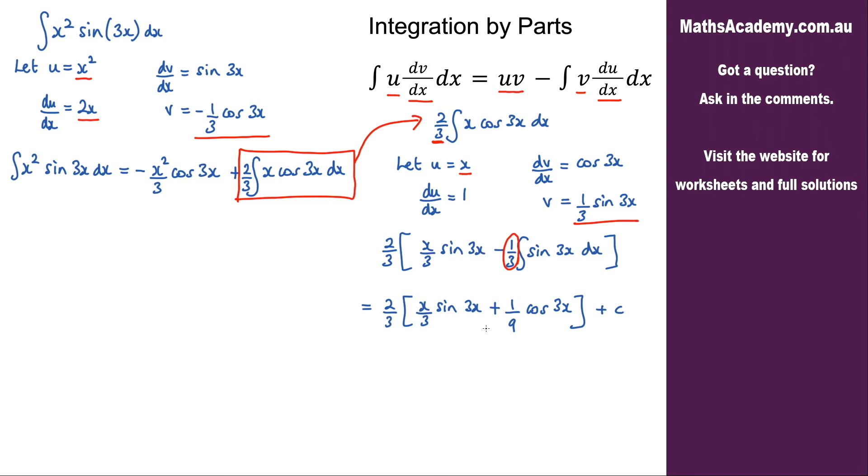Let's deal with these fractions before we go further. I get 2x over 9 sine of 3x plus 2 over 3 times 9, that's 27, cosine of 3x plus the constant of integration.